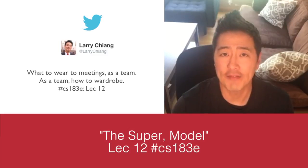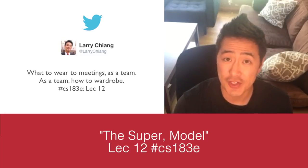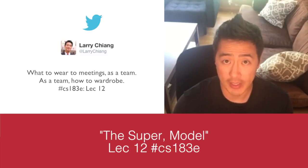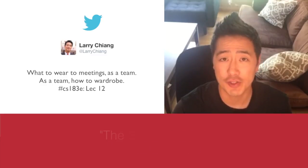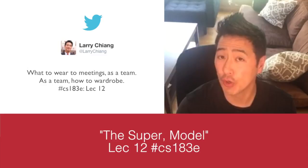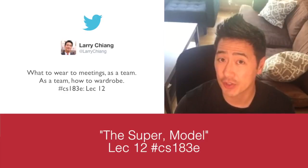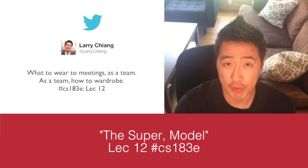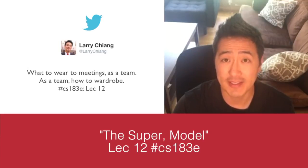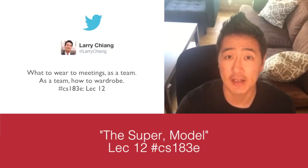You don't want to have three people showing up like triplets. If your other two co-founders are Asian and you're Asian, you don't want to be three triplets. If you're Indian and your other two co-founders are Indian, you don't want to show up as three triplets. You want to look like two coders and one business person. The most ideal team is two to five coders. You want to have diversity in wardrobe.